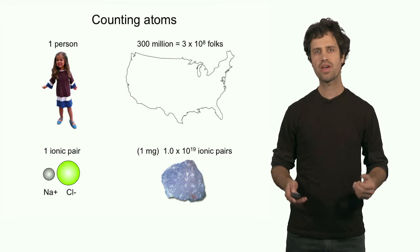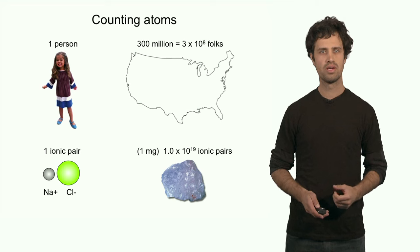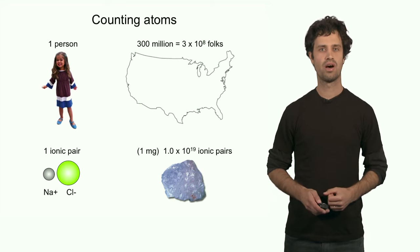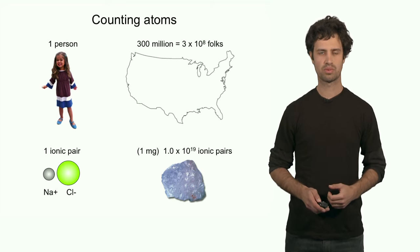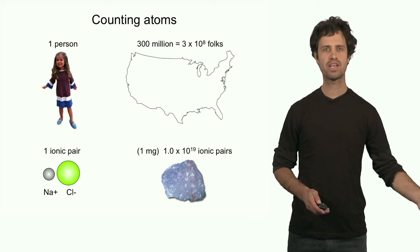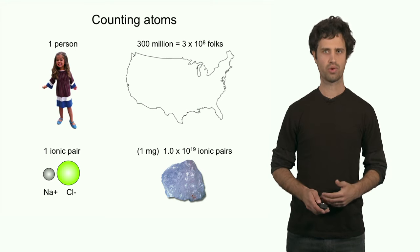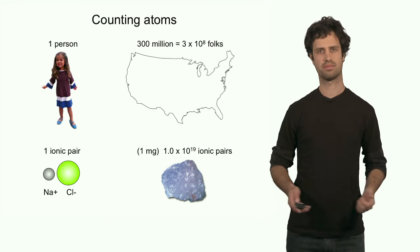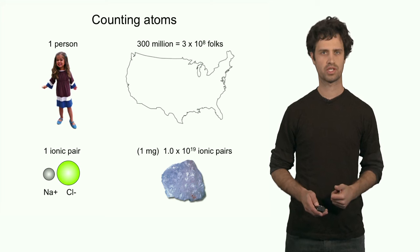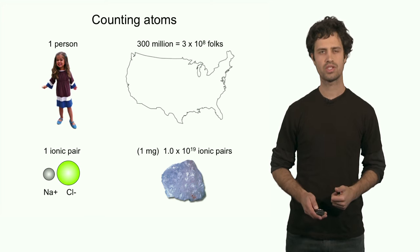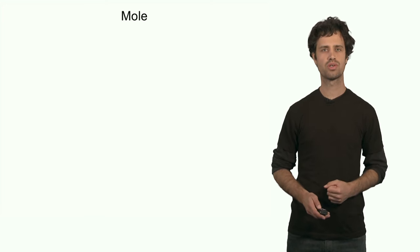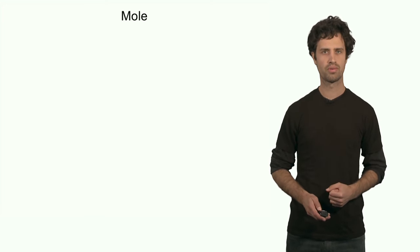It would be very helpful, in order to keep track of the number of atoms and molecules, to have a different kind of metric for the number of atoms. Now in chemistry, we do have such a metric — it is a unit, and this unit is called the mole.